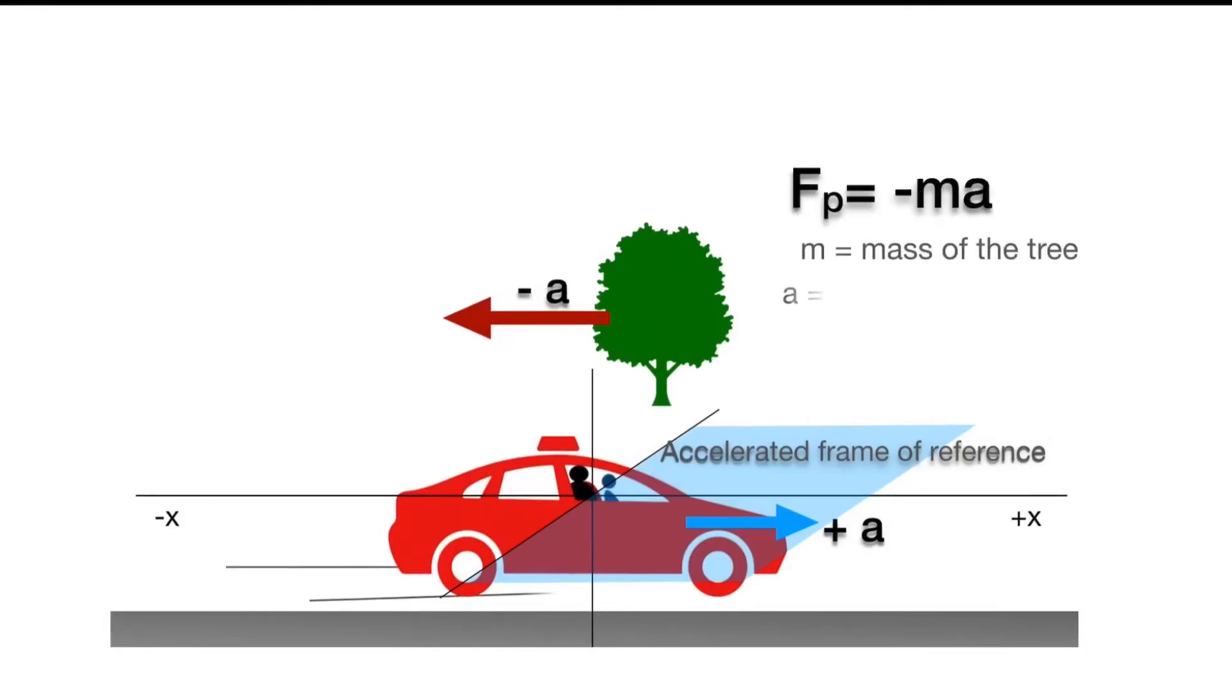In this type of situation the observer needs to consider an imaginary force Fp, and that is equal to the mass of the object multiplied with the acceleration of frame of reference from where the observer is watching, and it acts opposite to the motion of the frame.